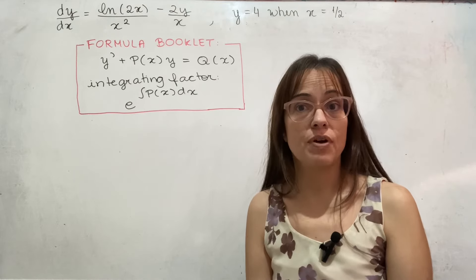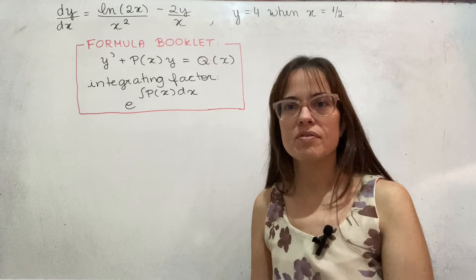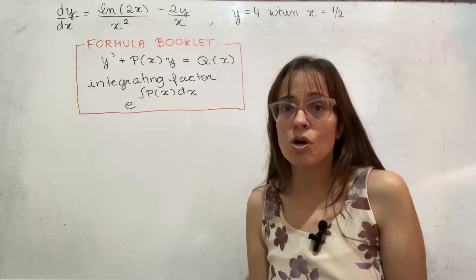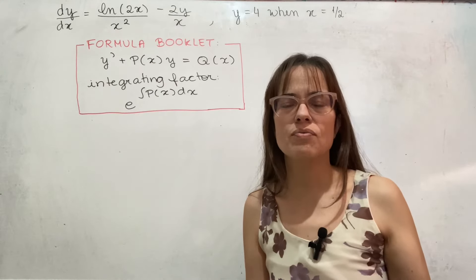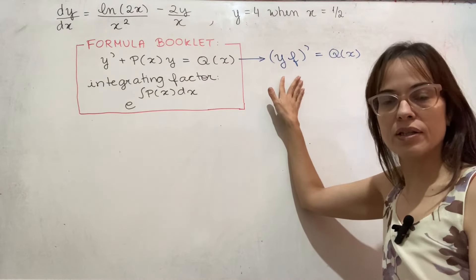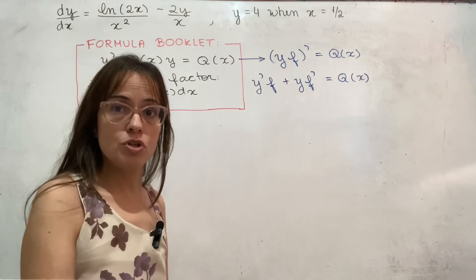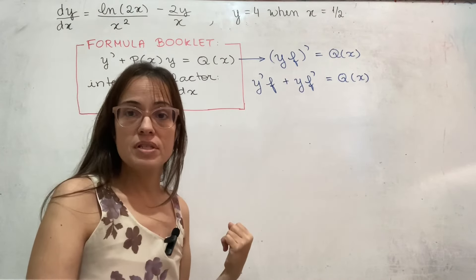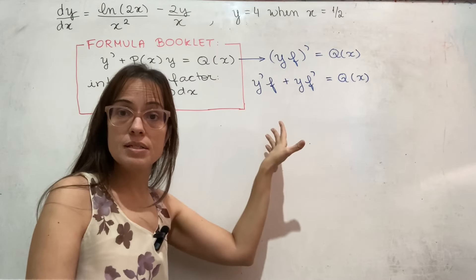This is what the formula booklet tells us about integrating factor, and I'll be honest — I really don't like treating this as a magical formula. But it is helpful during the exam to have it in the formula booklet because it saves time. The idea is that you are trying to get the left side to be a product rule expression. If the left side of the differential equation could be written as a derivative of a product, applying the product rule would give you a specific form. If something is multiplying the y prime, start by dividing everything by that thing, and then f prime over f becomes the p they're talking about.